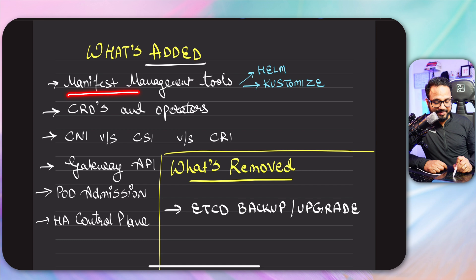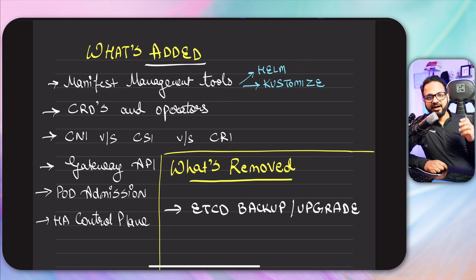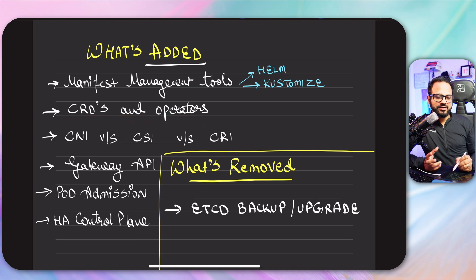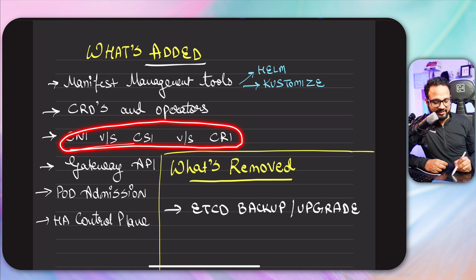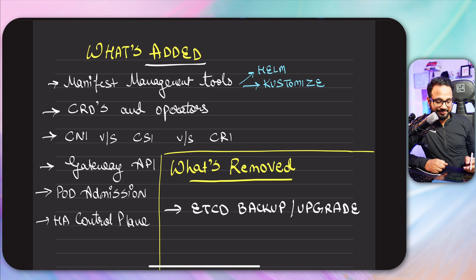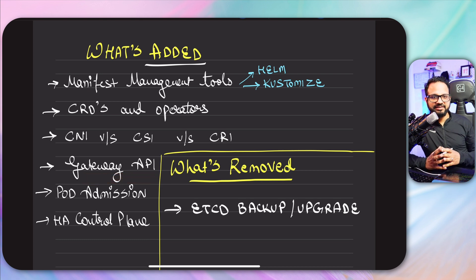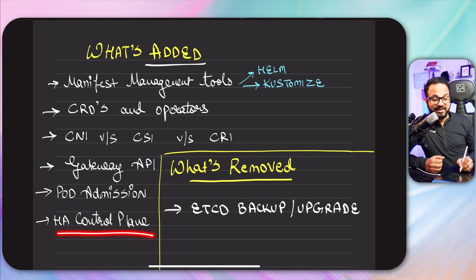They have added manifest management tools — Helm and Kustomize — two important topics that have been added. Then there are CRDs and operators: custom resource definitions, custom resources, operators, etc. They have also increased the focus on CNI, CSI, and CRI — the container extension interfaces. A newly added topic is the Gateway API, which is the newer version of Ingress. And then there is pod admission and high availability control plane.